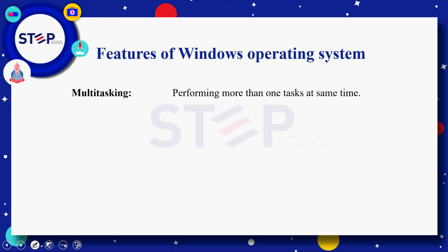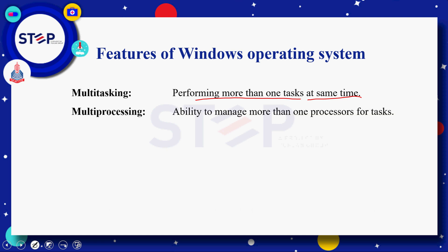Features of Windows operating system — سب سے پہلے multitasking ہے۔ Multitasking آپ کے Windows کا وہ feature ہے جس کے through ہم at the same time multiple tasks perform کر سکتے ہیں، for example at the same time songs سننا اور ساتھ میں MS Word پر document type کرنا — یہ multitasking کی ایک example ہے۔